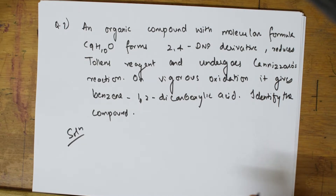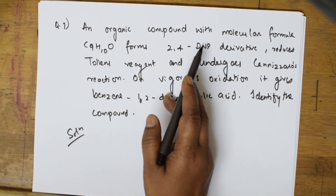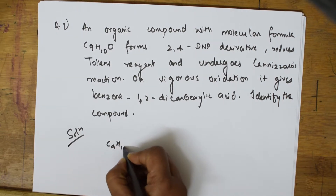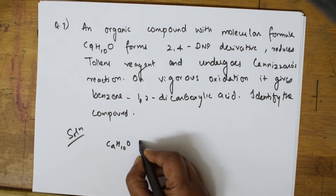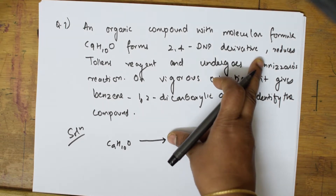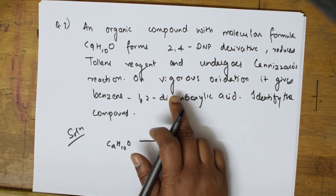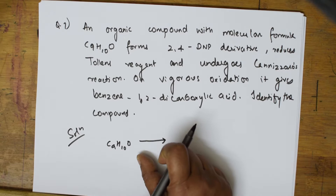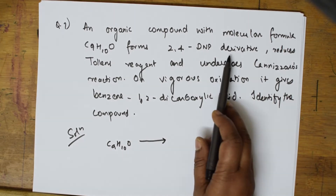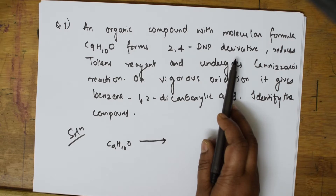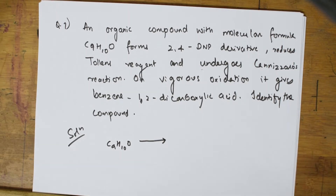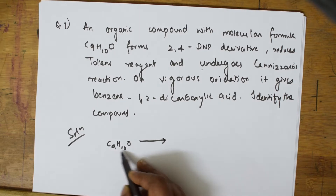Write the summary of facts: an organic compound with molecular formula C9H10O. This forms a 2,4-DNP derivative, reduces Tollens reagent, and undergoes Cannizzaro's reaction. Since it forms a 2,4-DNP derivative, reduces Tollens reagent, and undergoes Cannizzaro's reaction — compulsory it is an aldehyde.